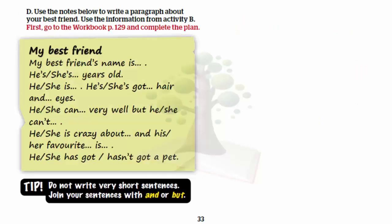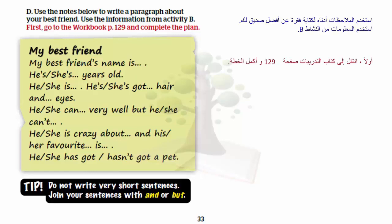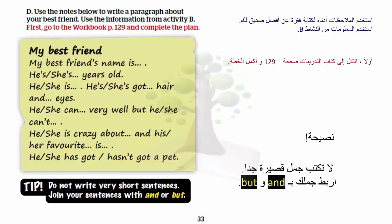Use the notes below to write a paragraph about your best friend. Use the information from activity B. Tip: Do not write very short sentences. Join your sentences with 'and' or 'but'.